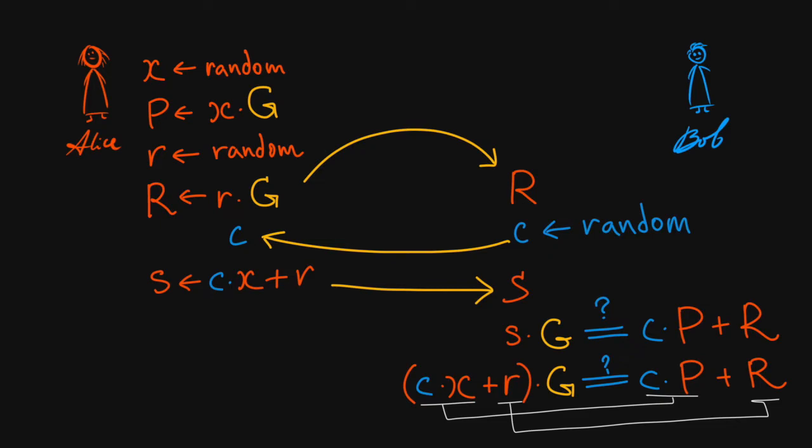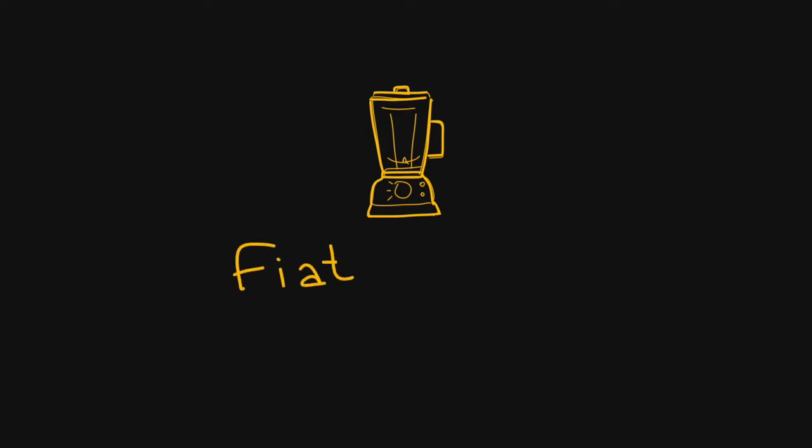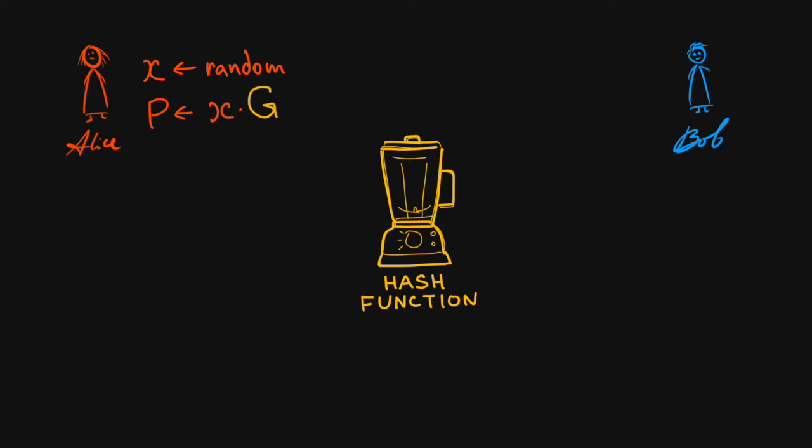This protocol is now sound, but it is interactive, which means that both parties must be present to verify the proof. What is more useful is a non-interactive scheme where the prover creates a signature once and others can verify it any number of times without the prover's participation. Turns out there is a trick called Fiat Shamir Transform that allows us to use a cryptographic hash function to simulate this interaction.